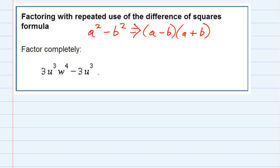So, we're asked to factor this, and the first thing that we should notice is that there is a common factor amongst both terms, this one and this one. They both have a 3, and they both have a u³ in common.